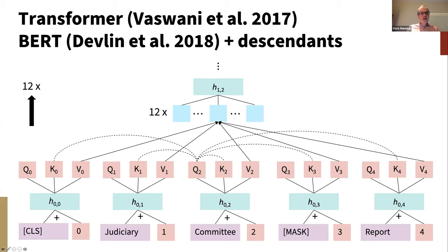The way BERT works is it has contextual word representations above each word. From the initial representation, by linear transformations, it constructs a query, a key, and a value. The query is used with respect to every other word's key to work out an attention distribution. Those attention distributions are then used to do a weighted sum of the values at each position, giving you one component of a new representation. You compute 12 different attentions and combine them to get a new representation of the word. Then you build a deep stack of these transformer cells, eventually getting highly contextualized word meanings.